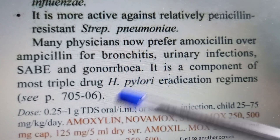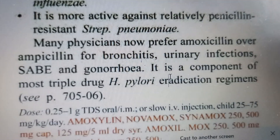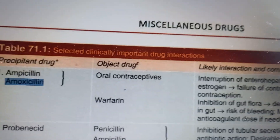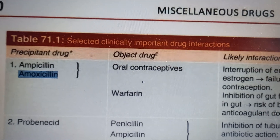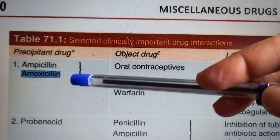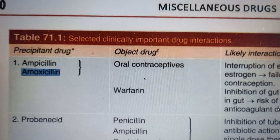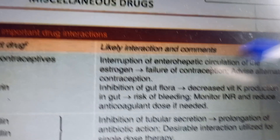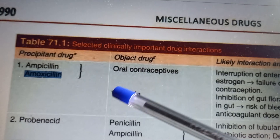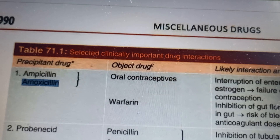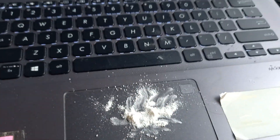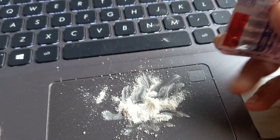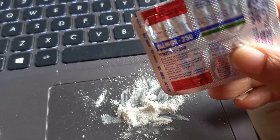For H. pylori, which causes peptic ulcers, amoxicillin is included in triple drug therapy. An important drug interaction to remember is with oral contraceptives — though less significant than with ampicillin, it can lead to contraceptive failure, so caution is needed. Importantly, amoxicillin is safe in pregnancy and can be given if required.